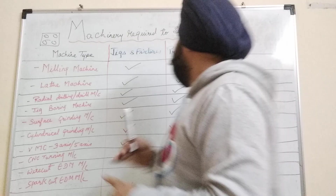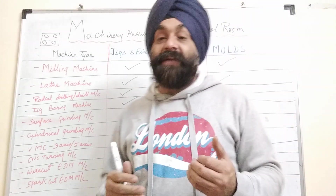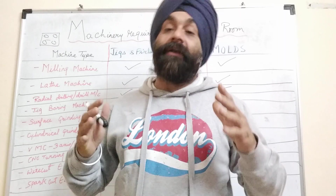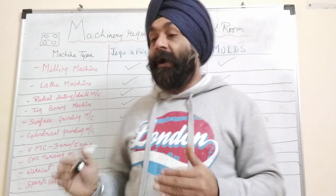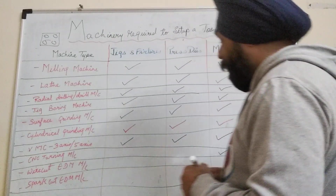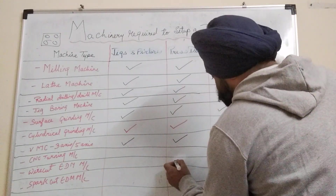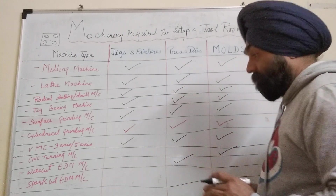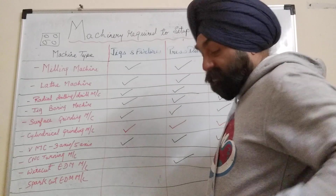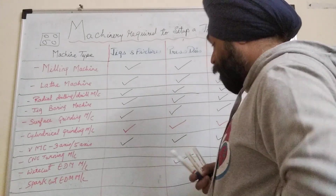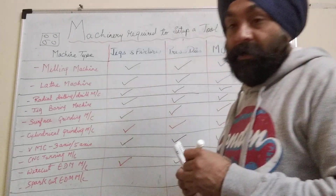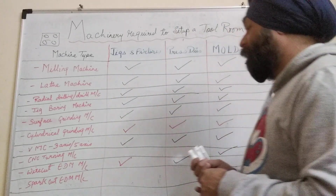Wire cut EDM is essential for press dies — specifically punching and blanking dies require it to cut profiles with very high accuracy. It can also be required for jigs and fixtures where very high accuracy is needed.